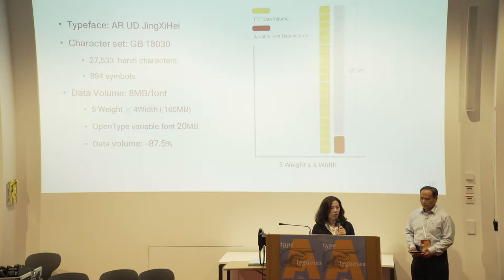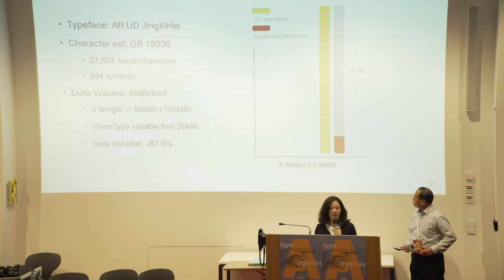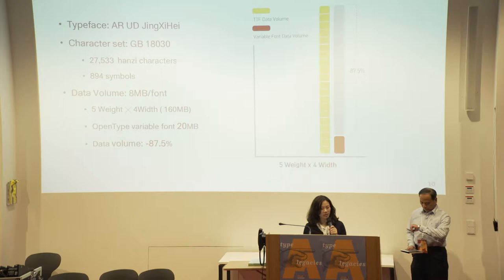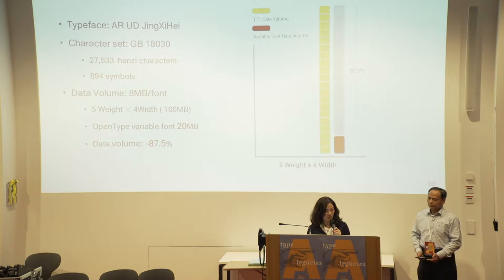The data volume of each of the two typefaces is 8 megabytes. So if we want to make two axes — five weights times four widths, 20 fonts in total — that will be 160 megabytes. But if this is an OpenType variable font, it's only 20 megabytes. So we can see the benefit of variable fonts: the data volume will be saved by 87.5%.